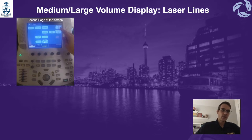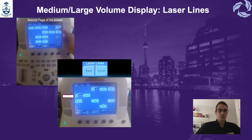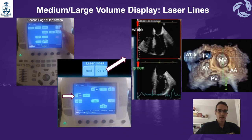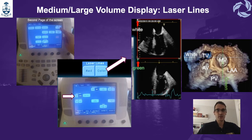An option you have when using the medium and large volume display is to use the laser lines. Here is where we can find the laser lines. When you activate them, you have a white line which is the reference plane for the four chamber view, and a green line for the two chamber view. These lines cannot be moved, but they give you an idea of where your image is positioned in 3D so you can orient yourself better.